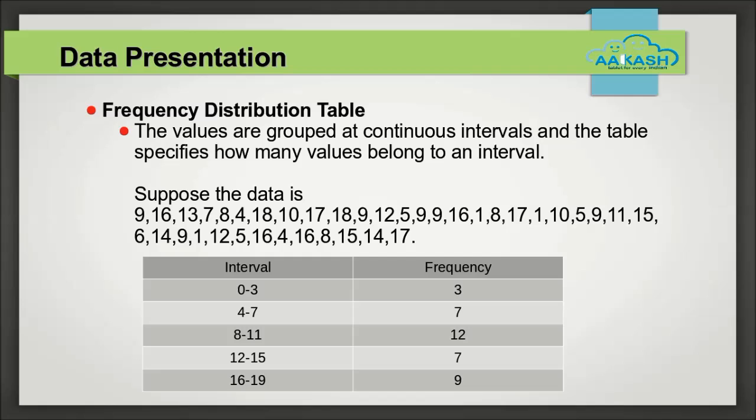In such cases, the range is divided into multiple smaller intervals and the number of values in each such interval is listed against the interval. This is called grouped frequency distribution table. The size of such a table depends on the size of the intervals. Taking larger intervals reduces the size of the table and taking smaller intervals increases the size of the table.